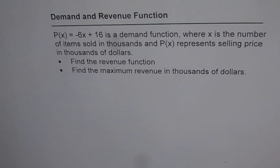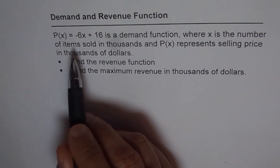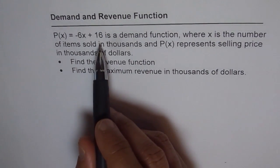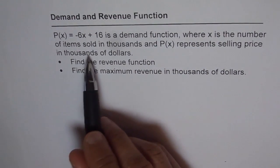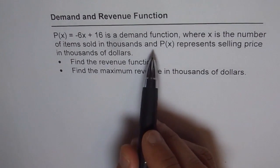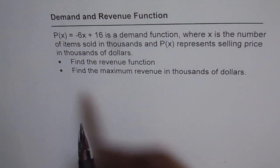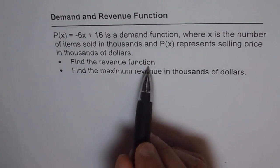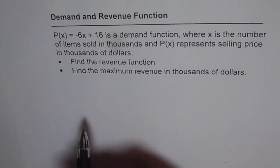Let's try to understand demand and revenue functions. P(x) = -6x + 16 is the demand function, where x is the number of items sold in thousands, and P(x) represents selling price in thousands of dollars. Find the revenue function and find the maximum revenue in thousands of dollars.